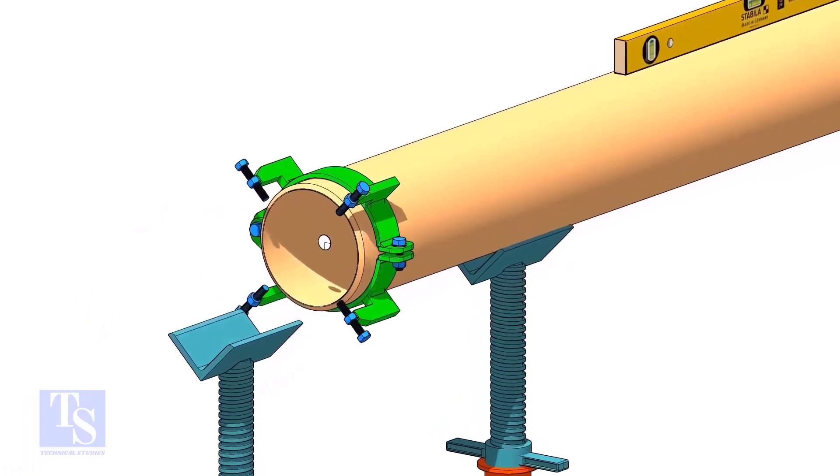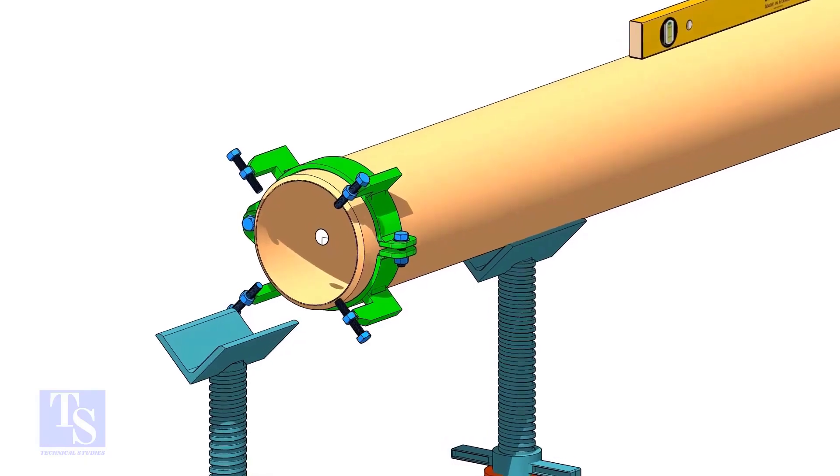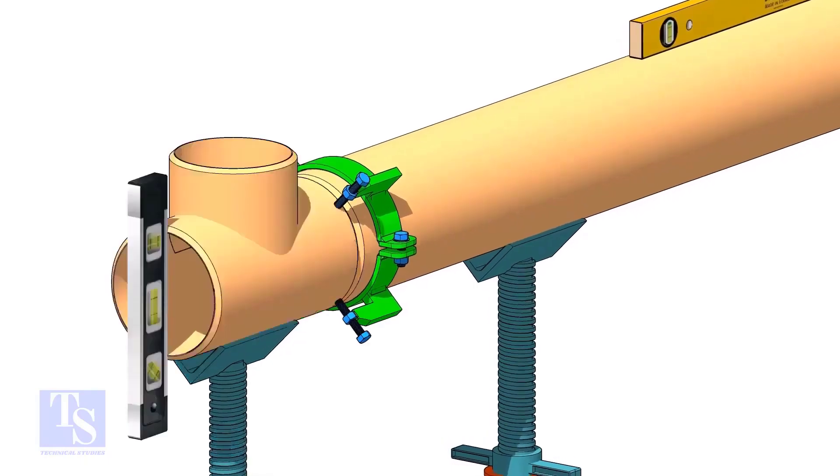Put the clamp, the gap rod, and the T, as shown. Make sure the overlap and the gap are equal around the joint.